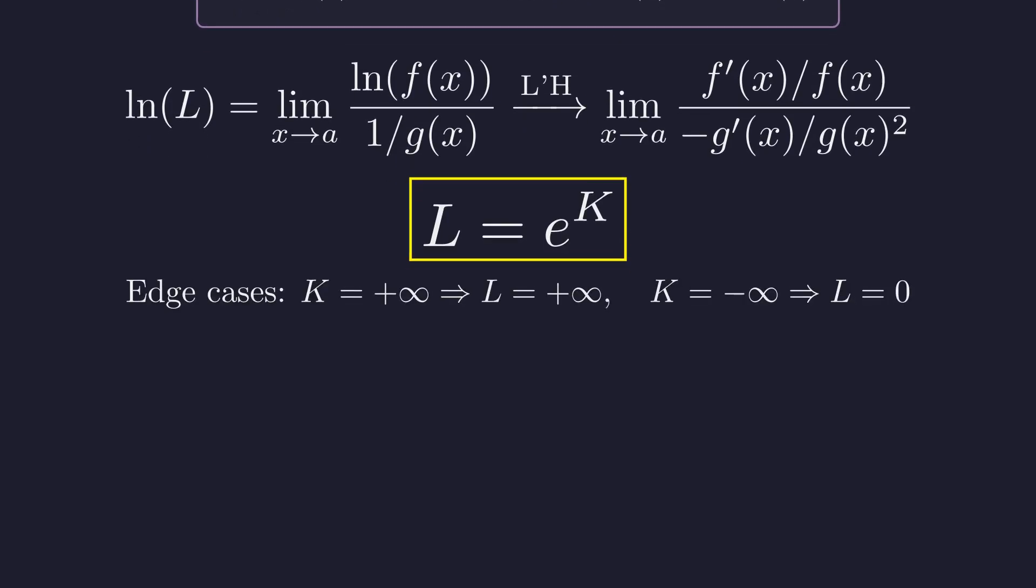Note the edge cases. If k is positive infinity, then L diverges to infinity. If k is negative infinity, L approaches zero. If k doesn't exist, neither does the original limit.